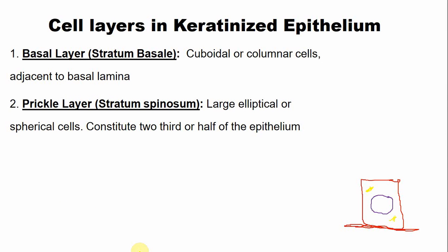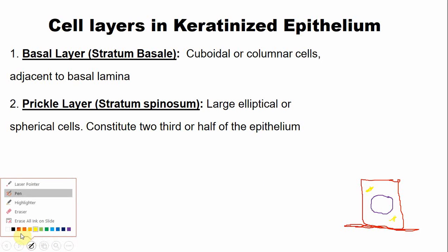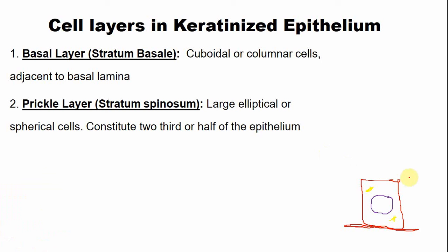The next cell layer is the prickle cell layer. The prickle cells are spherical cells with a large nucleus. They also contain tonofilament bundles. The prickle cell layer is also known as stratum spinosum, and this cell layer comprises two-thirds or half of the epithelium.